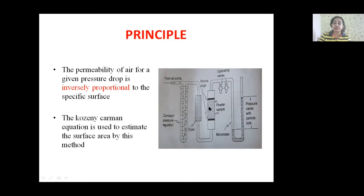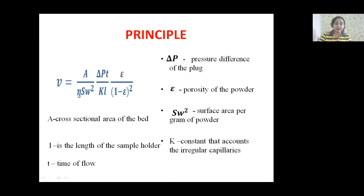The Kozeny-Carman equation is used to determine the surface area of a powder: V = (A / (η · Sw²)) · (ΔP · t / K · L) · (ε / (1 − ε)²). Here, ΔP is the pressure difference of the plug, t is the time of flow, ε is the porosity of the powder, K is a special constant accounting for irregular capillaries, L is the length of the sample holder, A is the cross-sectional area of the bed, Sw is the surface area per gram of powder, and η is the viscosity of the fluid.